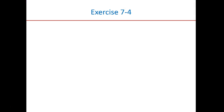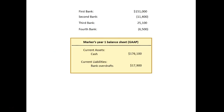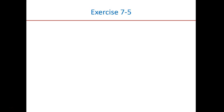Exercise 7-4: Marker has the following cash balances — First Bank: $151,000; Second Bank: -$11,400; Third Bank: $25,100; Fourth Bank: -$6,500. Prepare the current assets and current liabilities sections assuming GAAP and then IFRS. Under GAAP, the positive balances are shown as current assets (cash) and the overdrafts are shown as current liabilities. Under IFRS, the net balance is shown as current assets with no separate liability.